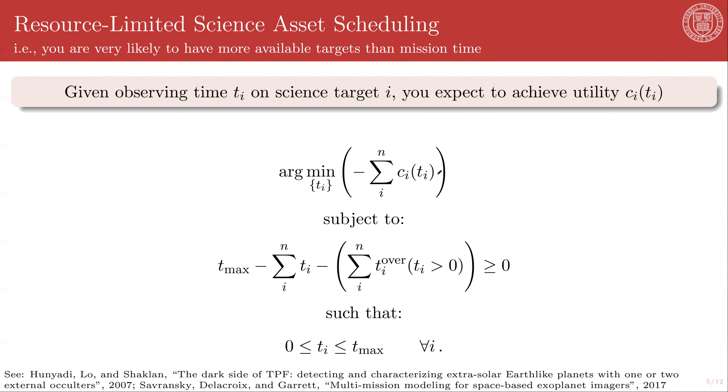So we're doing a constrained optimization. We are maximizing the summed utility for all of our allocated times. And typically, because these are real instruments, you will have overheads. So your constraint is that you have some maximum total integration time or mission duration. You are going to subtract from this the sums of your allocated times, and you are also going to subtract from this the sums of your overheads for those targets that actually got time allocated to them. And this whole thing has to be greater than or equal to zero.